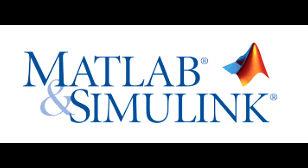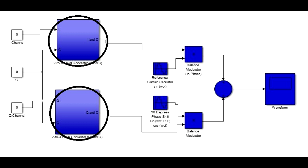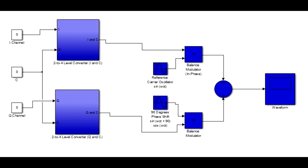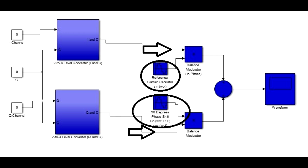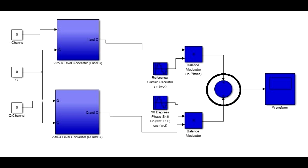MATLAB Simulink is a helpful software in creating the 8QAM generator. In the Simulink model, I, Q, and C represent the 3-bit input. The 2-to-4 level converter is responsible for polarity and magnitude as it passes through the product modulator. When polarity and magnitude of I and Q are determined, the I channel is multiplied by sin(ωct) through the balanced modulator. In the Q channel, the phase is shifted by 90 degrees, resulting in cos(ωct). The products from I and Q at the balanced modulator go to a linear summer, which adds I and Q resulting in a sine wave.